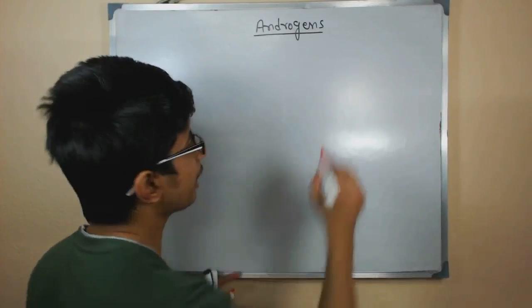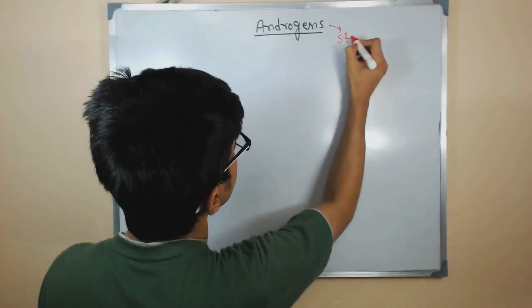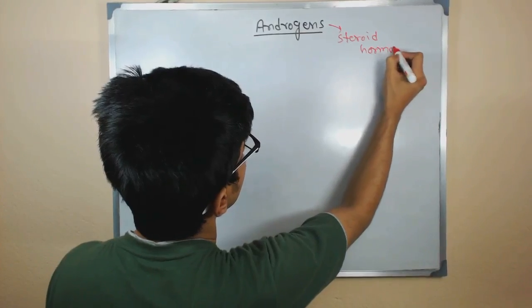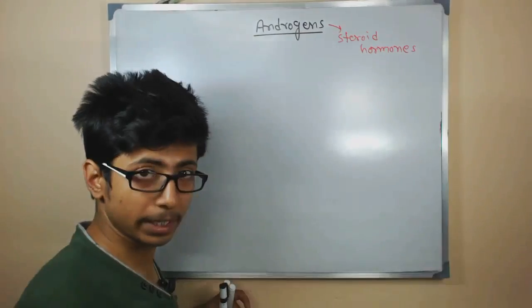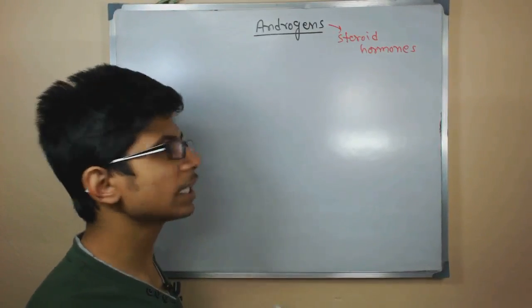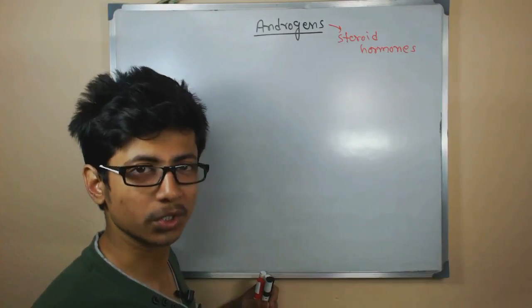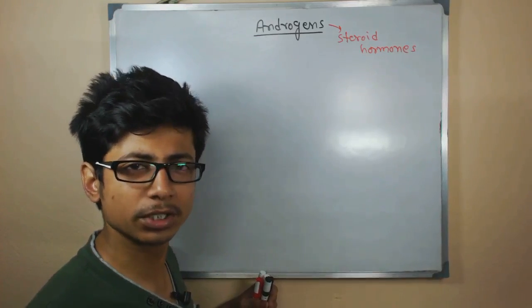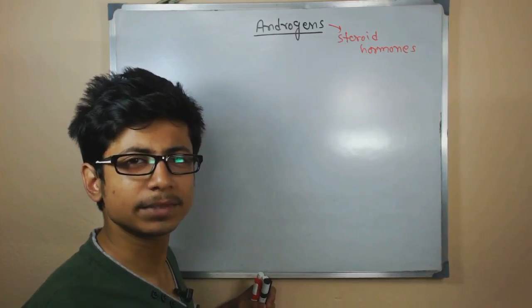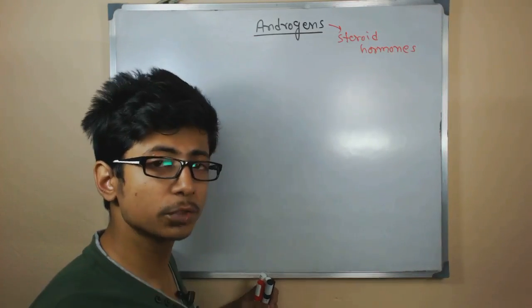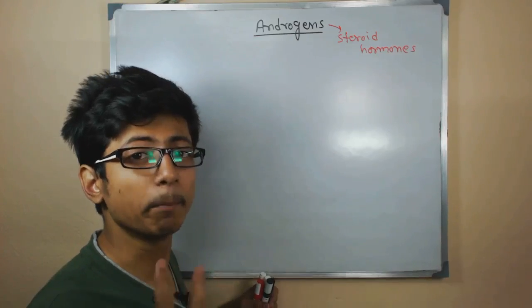In basic terms, androgens are steroid hormones found in both male and female, but it is found more in male than female, because androgens contain the hormones like testosterone and different varieties of testosterone, hydroxy testosterone, then ketotestosterone, and all these different varieties of testosterone hormones should be found in male more than female.